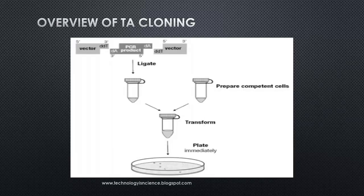Looking at the overview of the TA cloning procedure, we require a linearized vector having a T overhang and a PCR product having an A overhang. Based on the T-A pairing, using a ligase enzyme, we can ligate the PCR product to the linearized vector, and that can be transformed into competent cells and plated on suitable media having selectable markers.